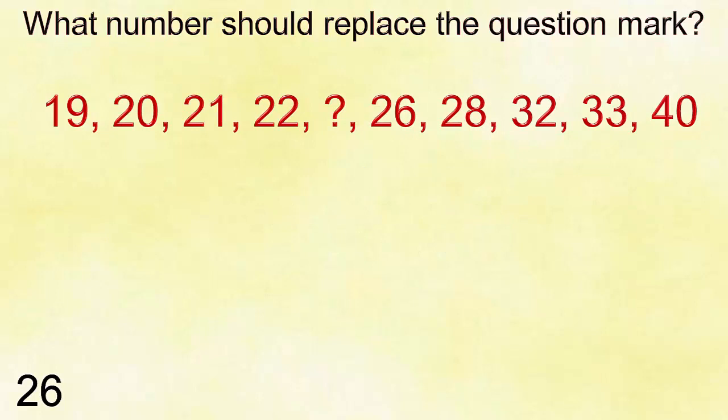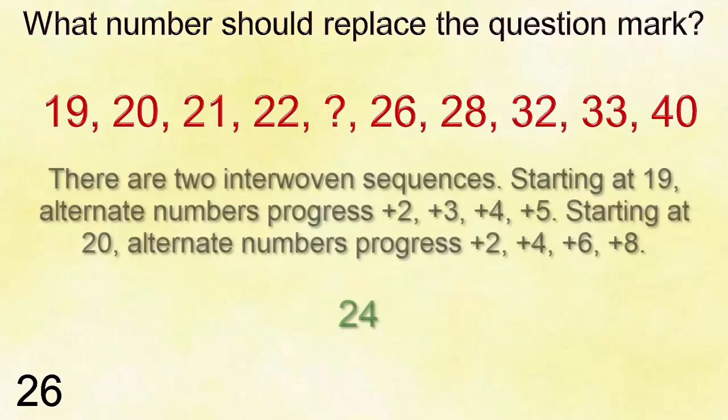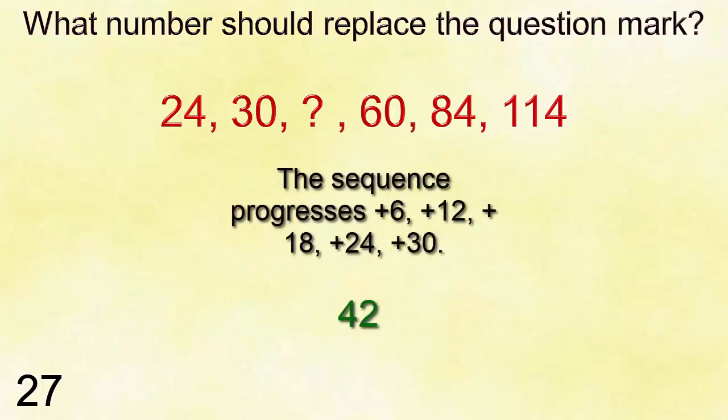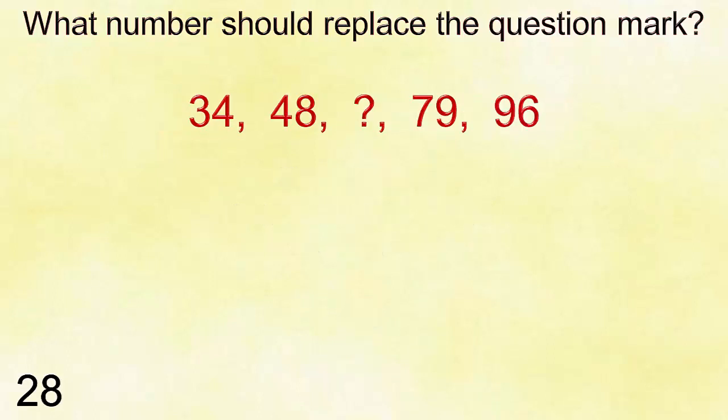Number twenty-six: nineteen, twenty, twenty-one, twenty-two, question mark, twenty-six, twenty-eight, thirty-two, thirty-three, forty. Answer is twenty-five. Number twenty-seven: three, nine, twenty-one, twenty-three, twenty-eight, thirty-three, forty-three, fifty-five.